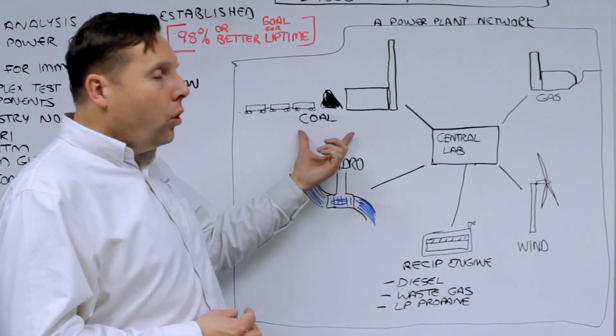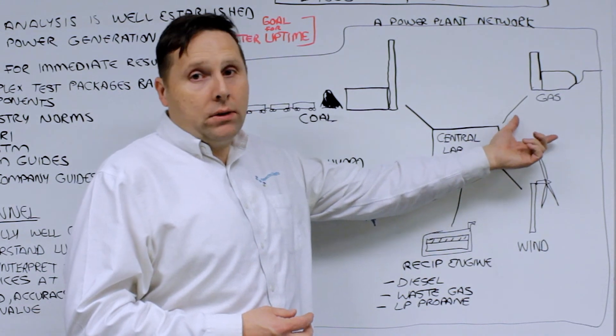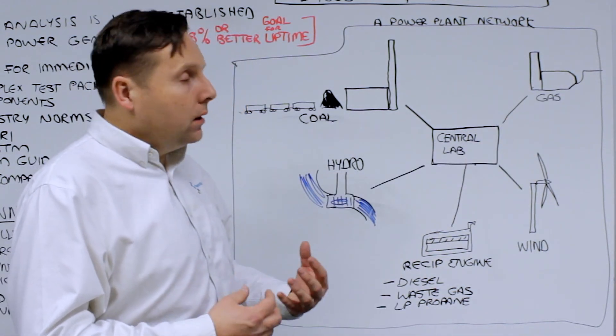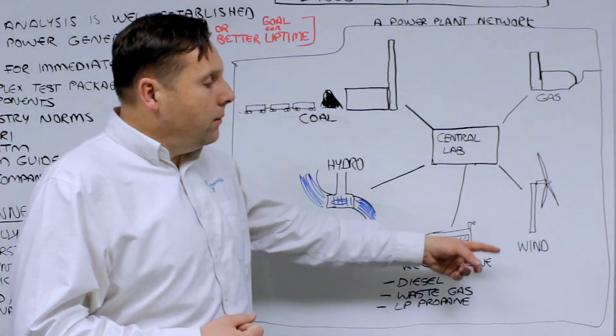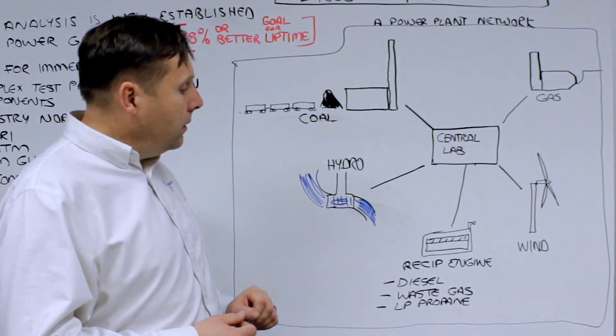You might have a coal-fired large power plant. You might have a gas turbine or a series of gas turbines that are part of a combined cycle. You can have maybe wind power assets. You may still have hydro electric based assets.